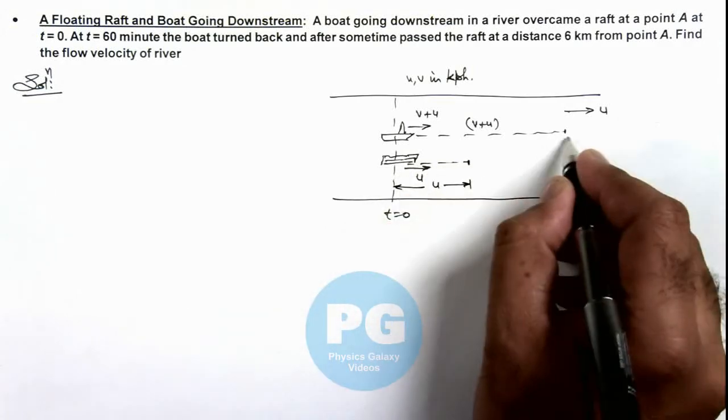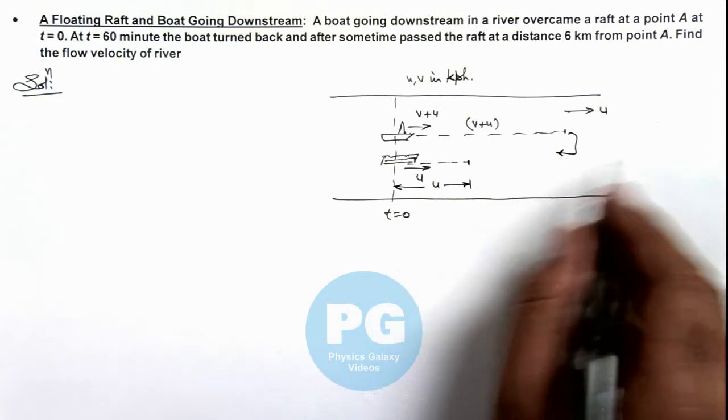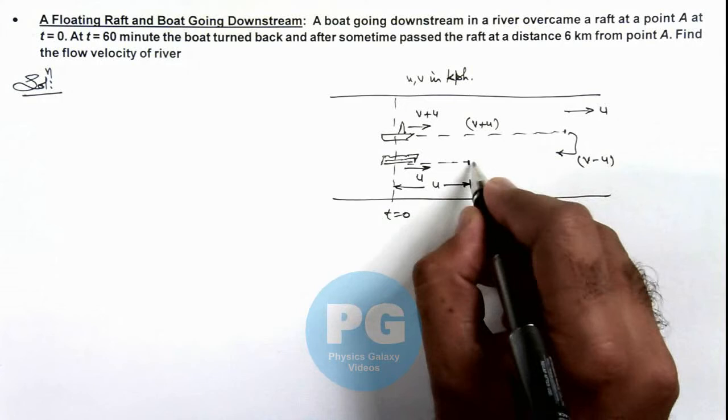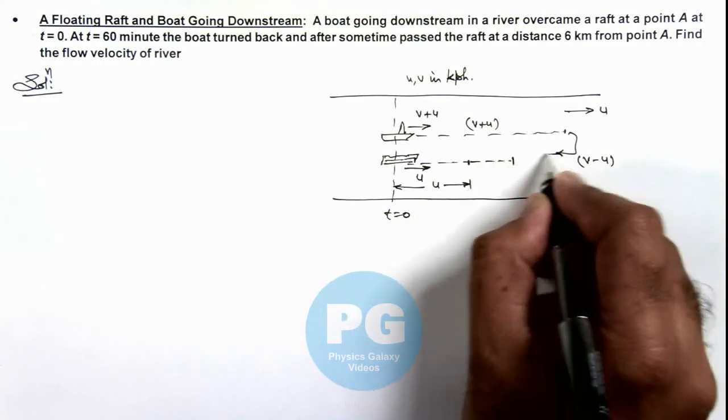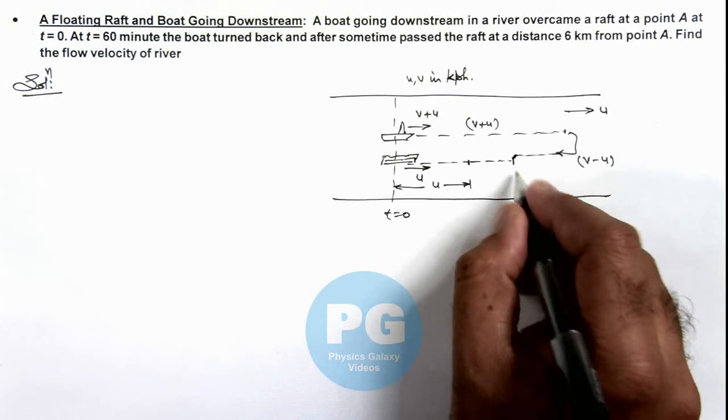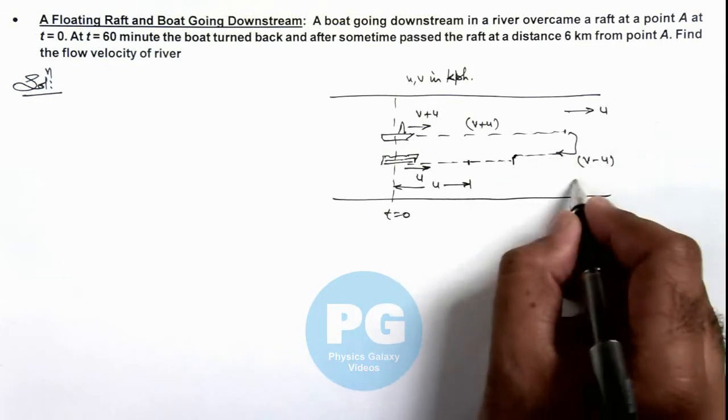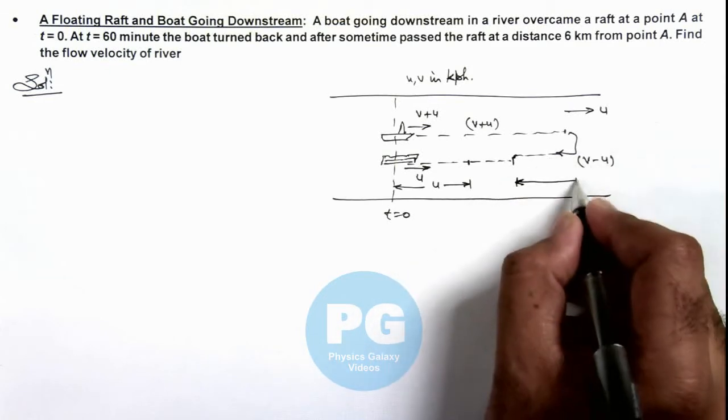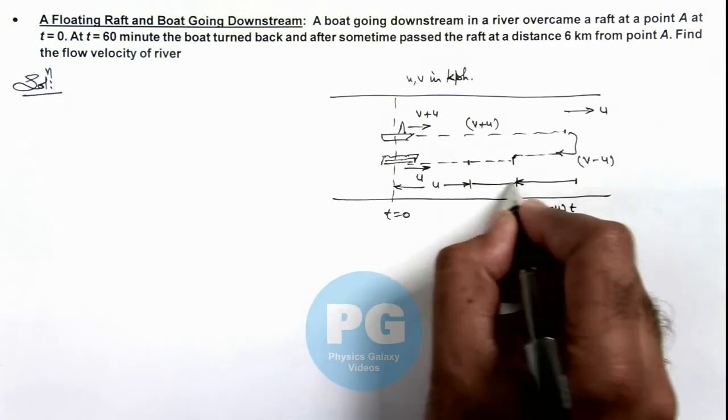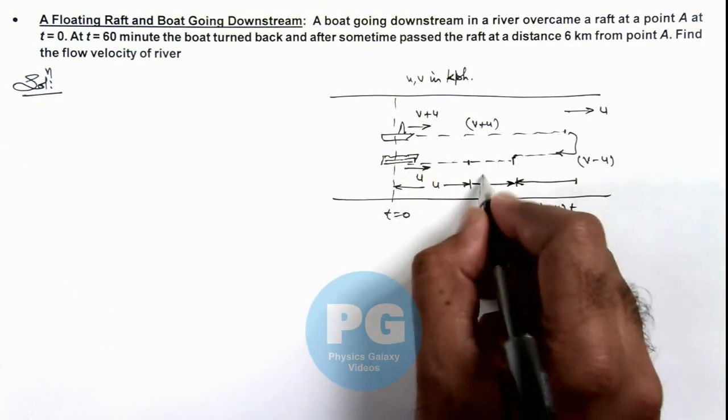Now the boat returns. When it returns, the speed of the boat would be v minus u. After time t, somewhere here the boat and raft will meet again. If this time is t after returning, then the distance traveled would be v minus u multiplied by t, and the distance traveled by the raft would be ut.